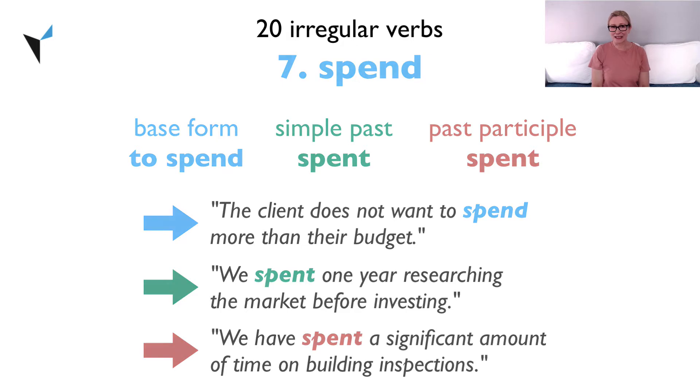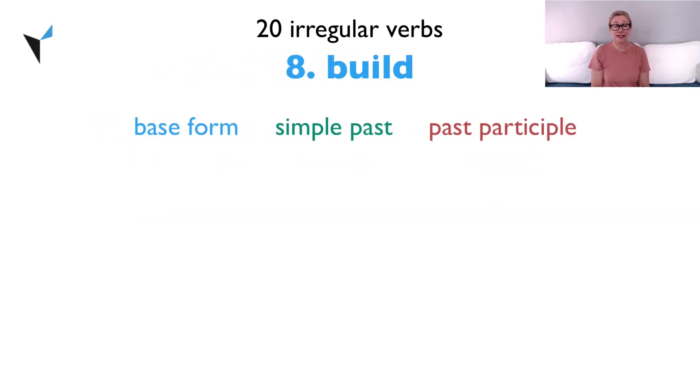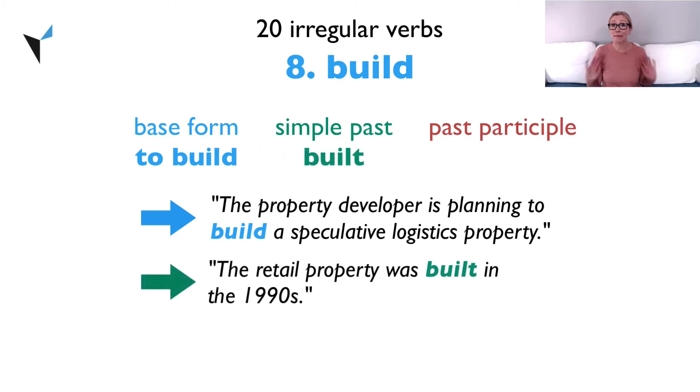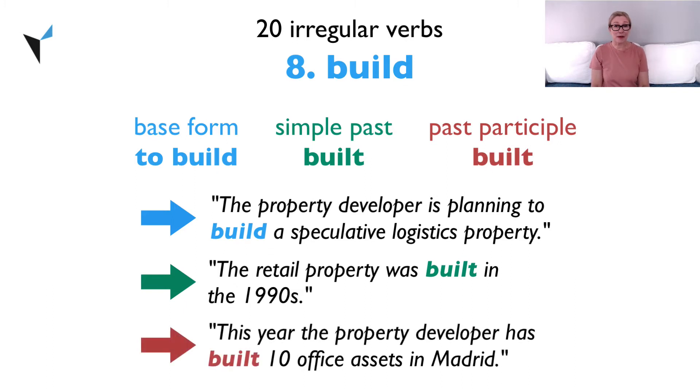Verb eight, build. The base form is to build. The property developer is planning to build a speculative logistics property. The simple past is built. The retail property was built in the 1990s. The past participle is also built. This year, the property developer has built 10 office assets in Madrid.